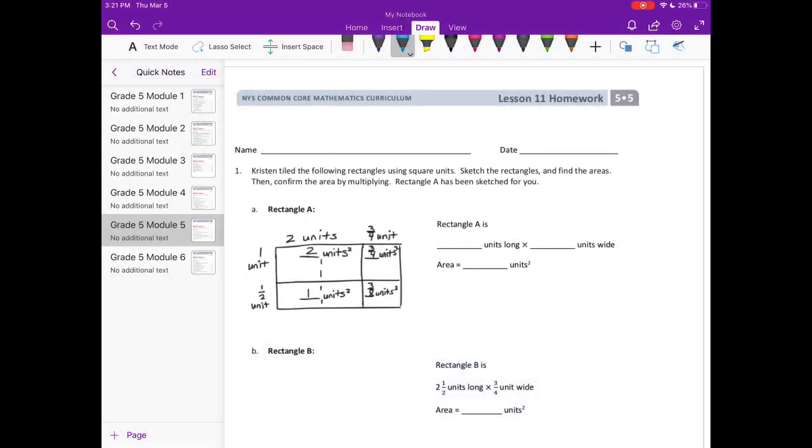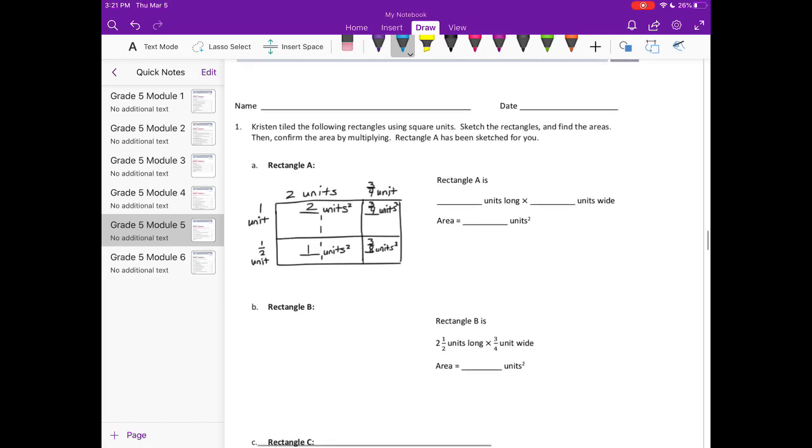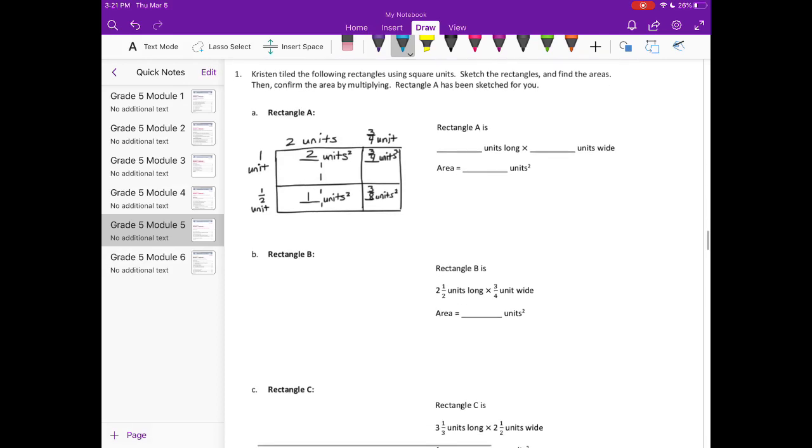Module 5 Lesson 11 Homework Number 1. Kristen tiled the following rectangles using square units. Sketch the rectangles and find the areas, then confirm the area by multiplying. Rectangle A has been sketched for you.